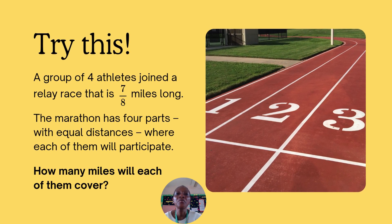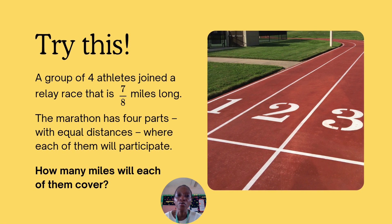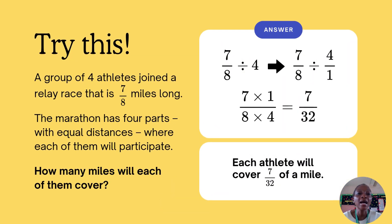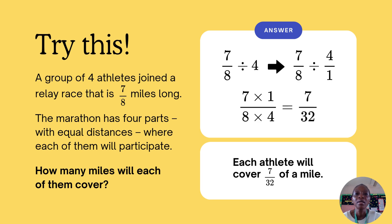Try another question: a group of four athletes joined a relay race — a race run by a group of athletes who pass the baton from one runner to another. The relay race is seven over eight miles long. The marathon has four paths with equal distances where each athlete will participate. How many miles will each of them cover?